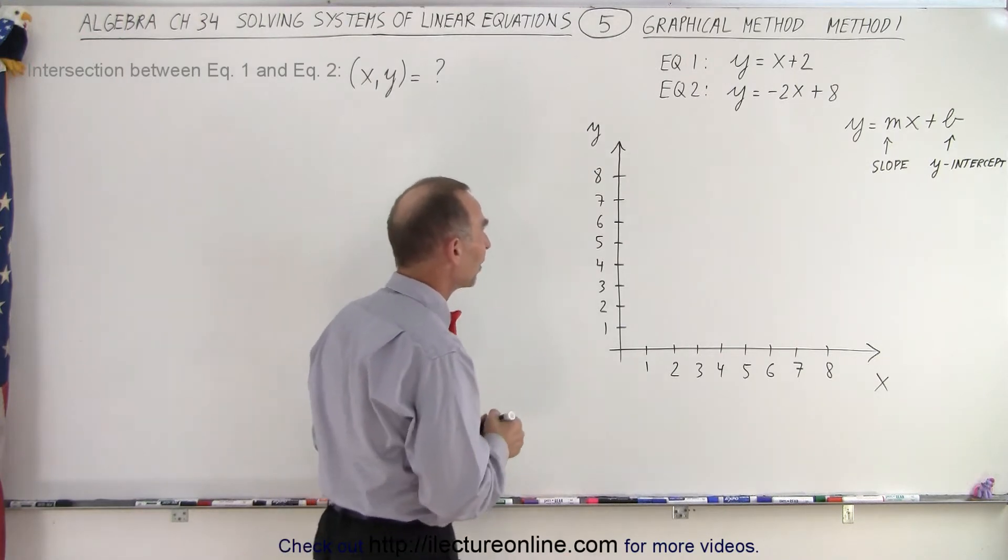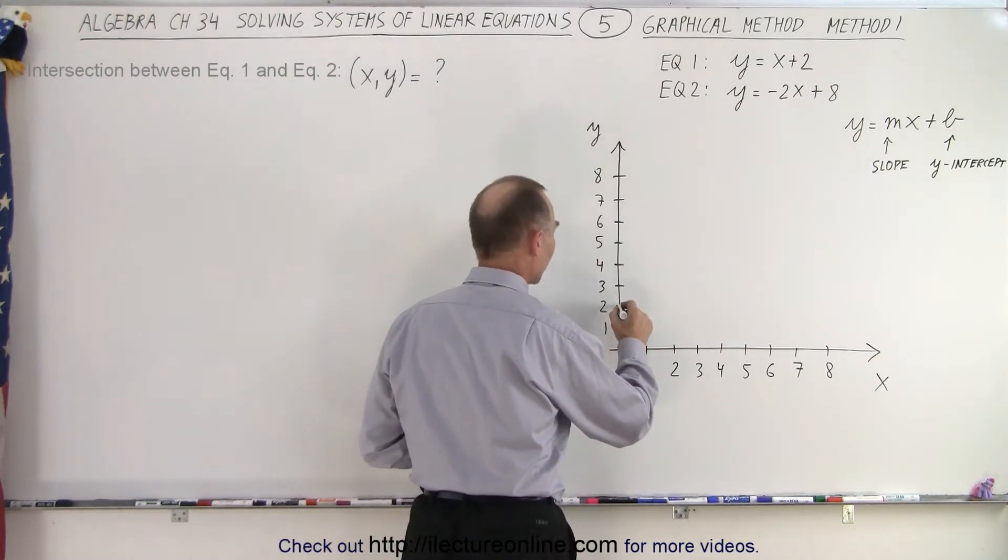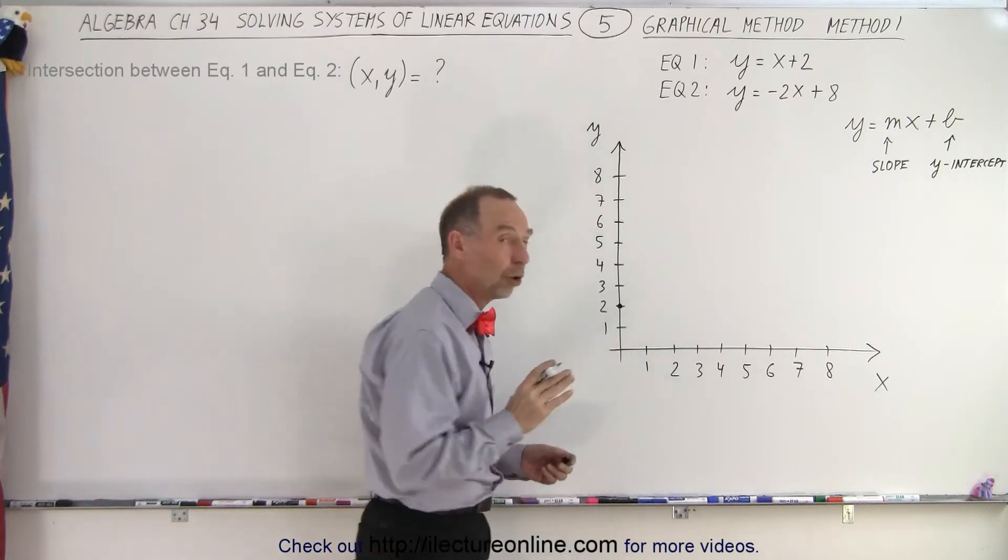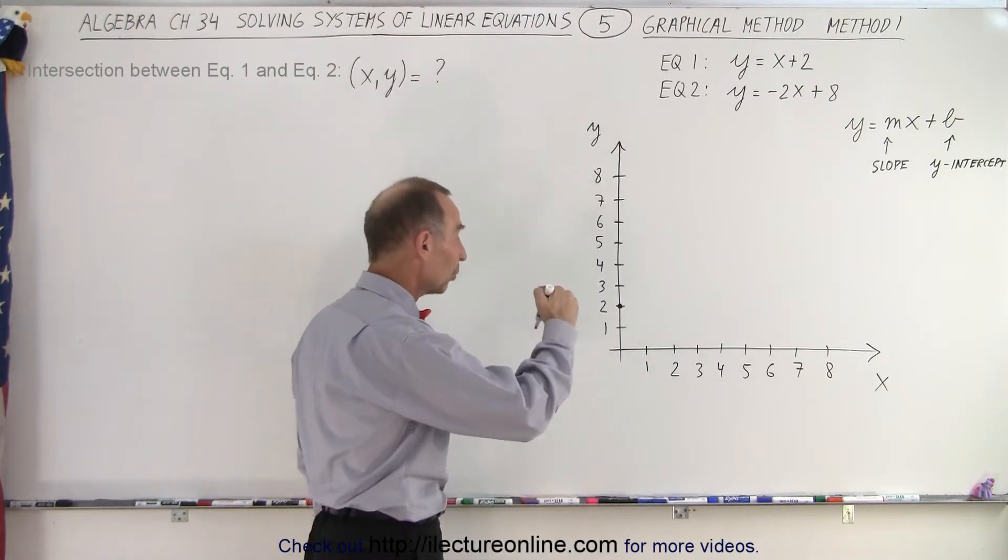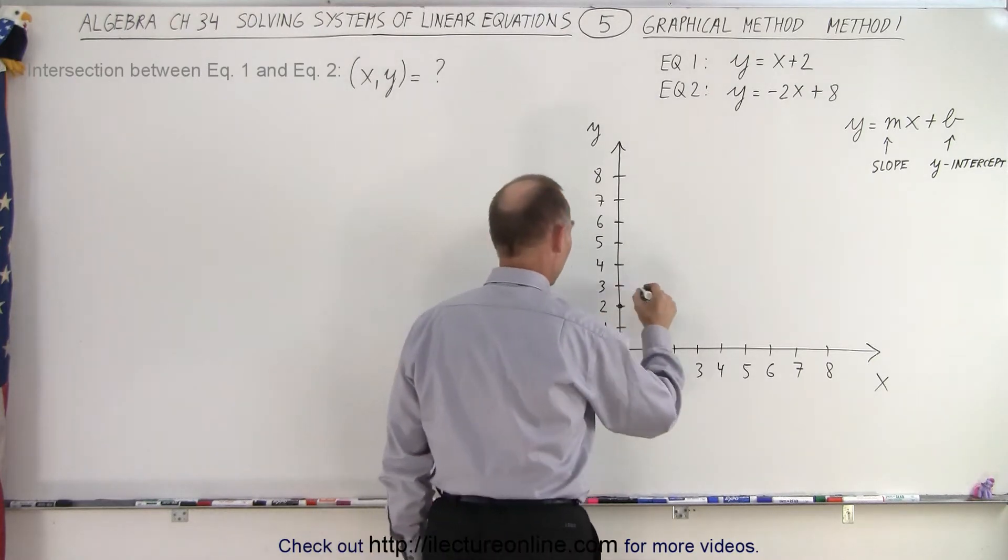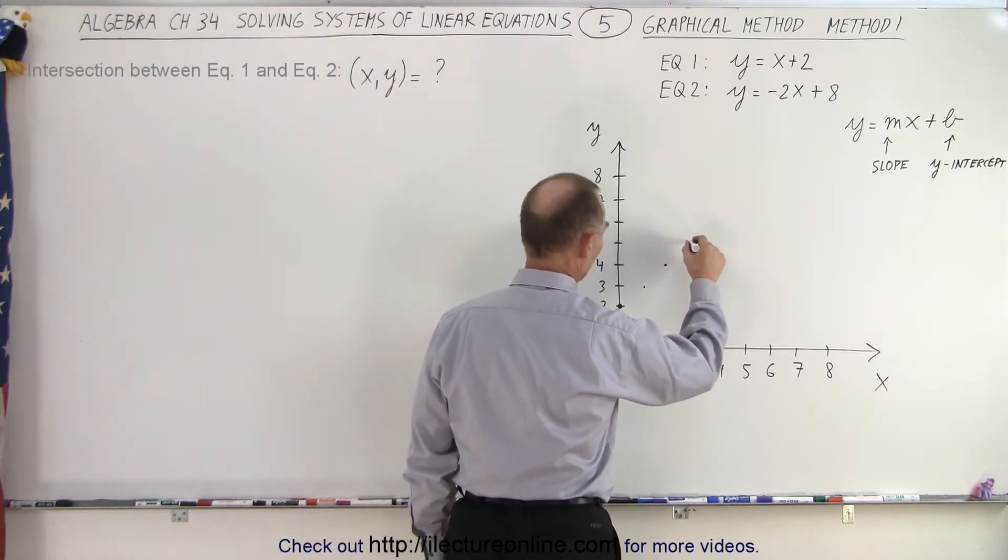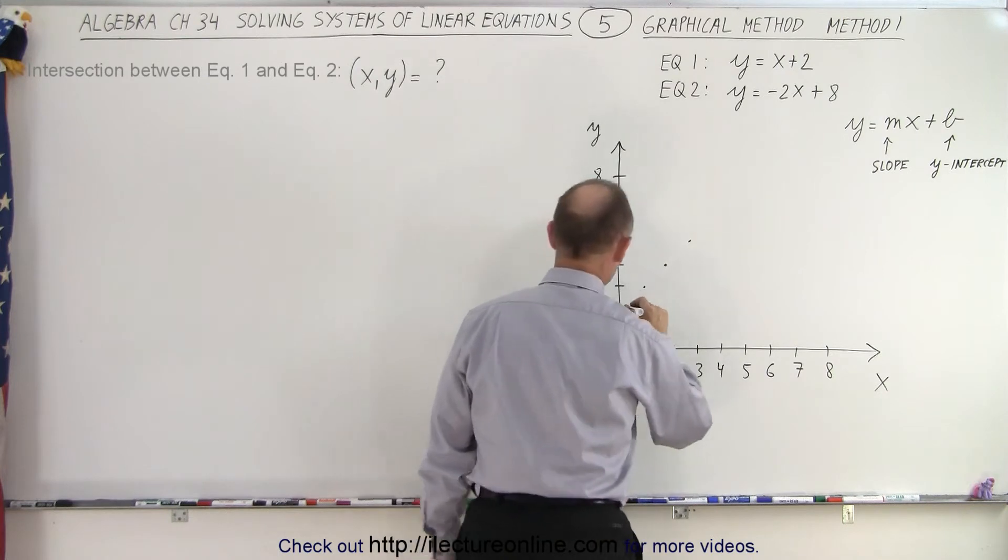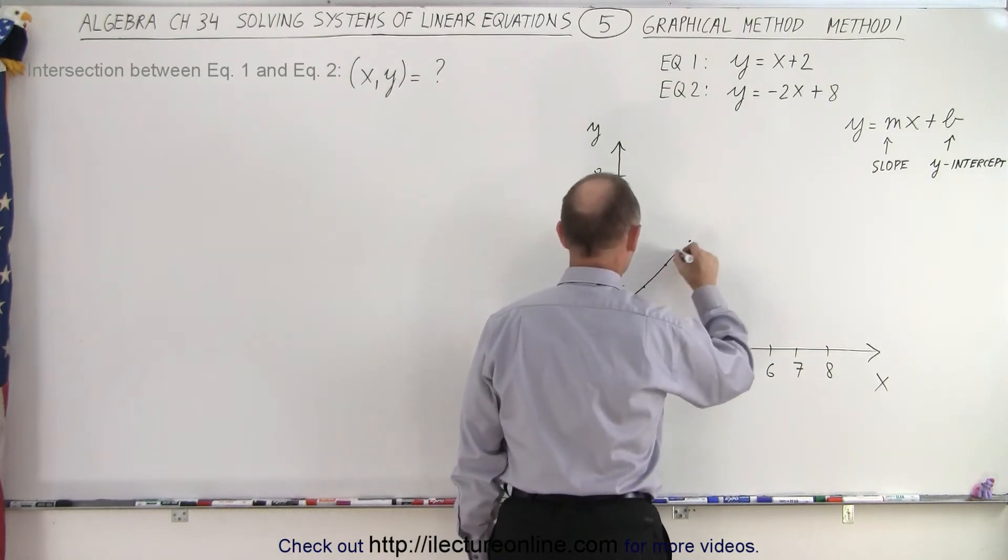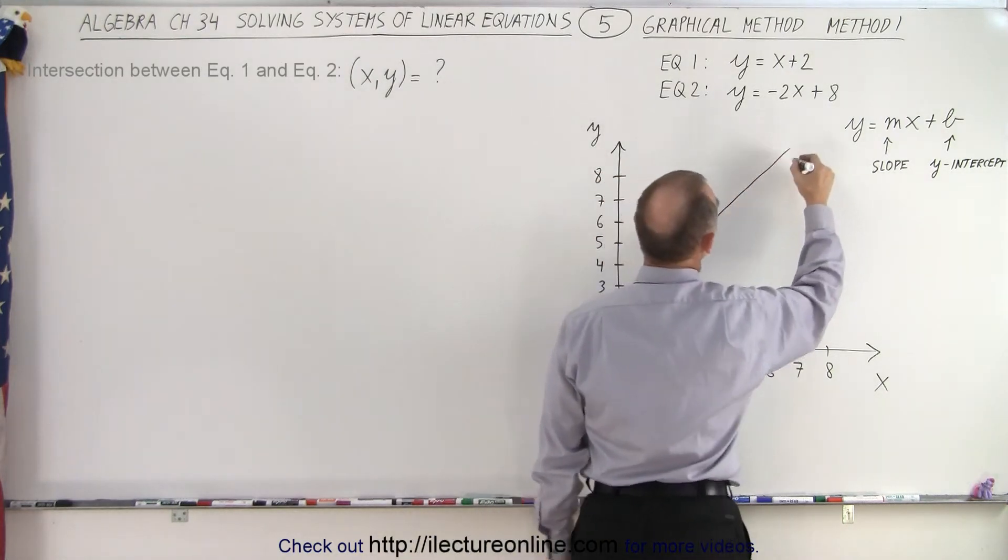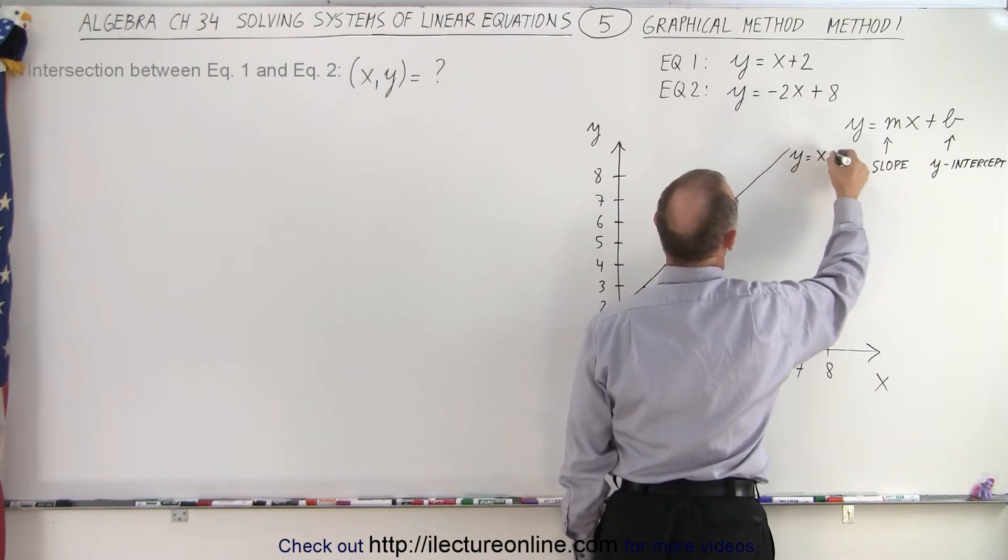First, we have y equals x plus 2. That means the y-intercept is 2 and the slope is equal to 1. That means the rise is 1 and the run is 1. So we go up 1, over 1, up 1, over 1, up 1, over 1. And if we connect those dots, we have the equation y equals x plus 2.